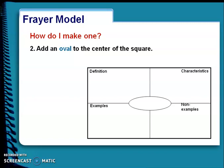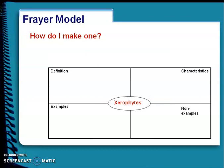In the center we have the concept written. Add an oval to the center of the square. Write the concept you are exploring in the circle. Here in this example, xerophytes is the concept that we are exploring, so we will write the concept xerophytes in the center.